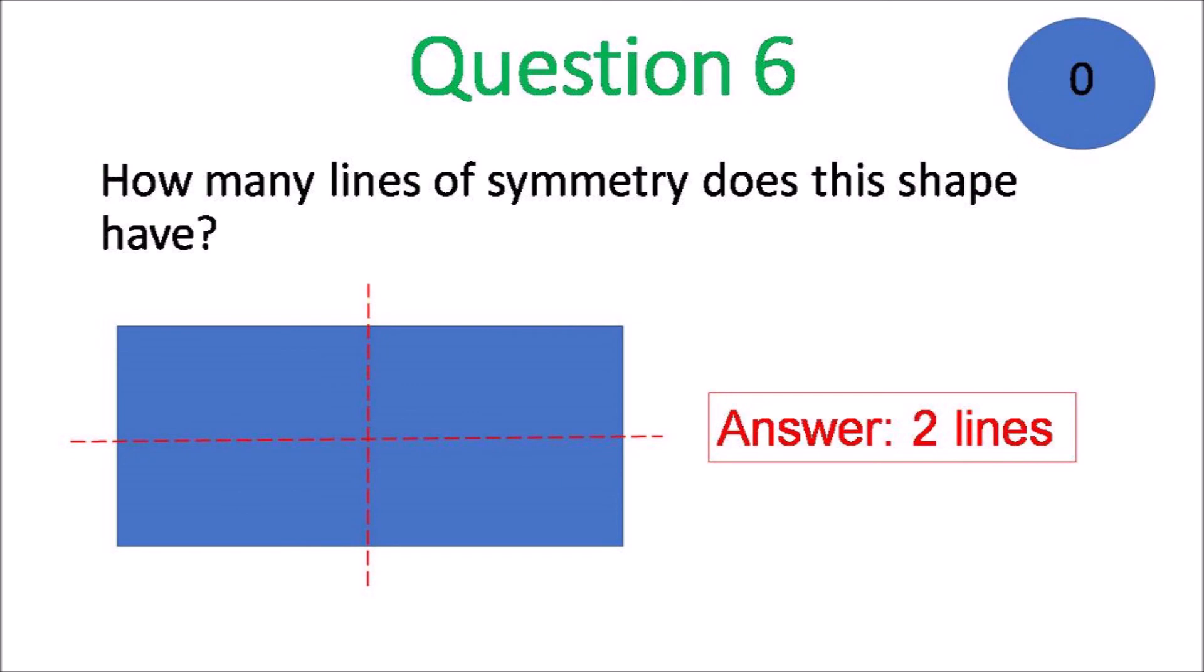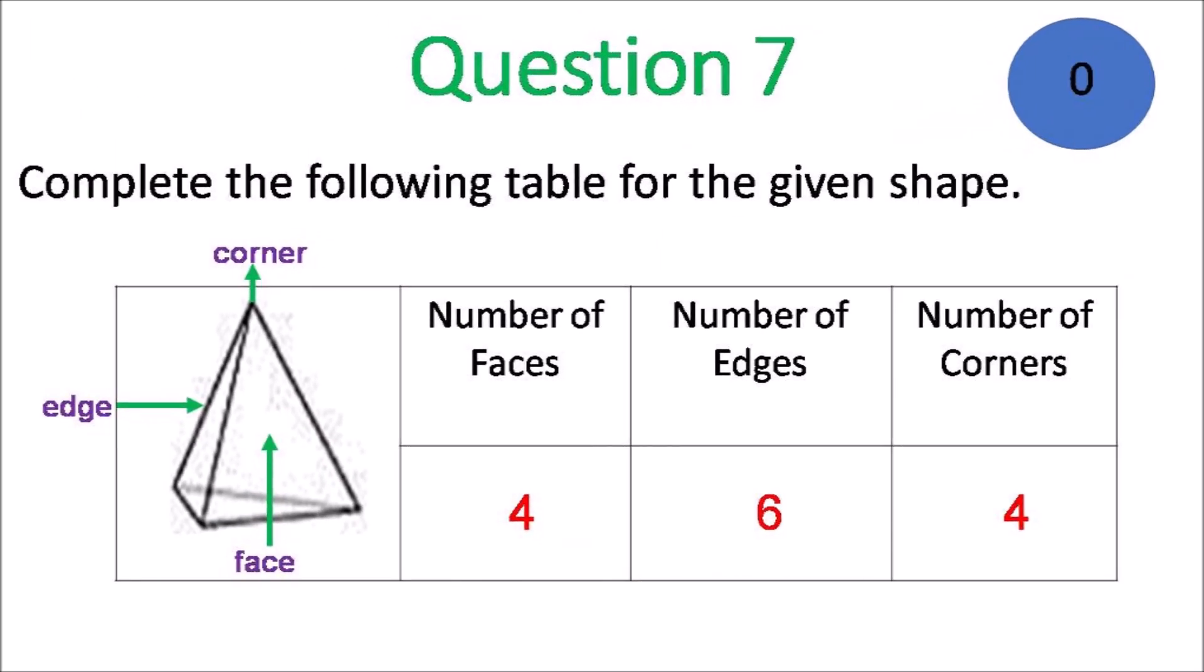How many lines of symmetry? 2. For a rectangle is 2 lines of symmetry. Number of faces is 4. Number of edges is 6. Number of corners is 4.